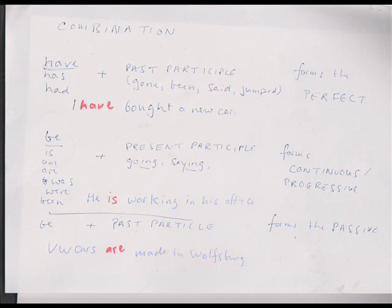We now come to the question of combinations. You will see on the next chart: 'have', 'has', or 'had' plus the past participle — examples: gone, been, said, jumped — this combination forms a perfect tense. 'To be' in any of its forms — is, am, are, was, were, been itself (dependent on have/has) — combined with the present participle, that is the -ing form, forms the continuous or progressive class of tenses.